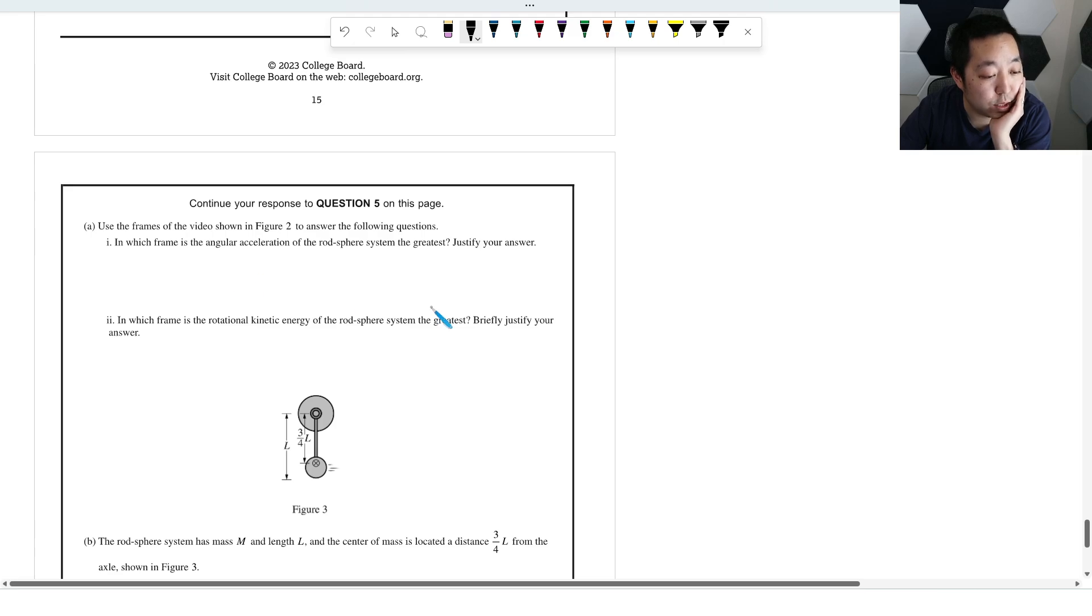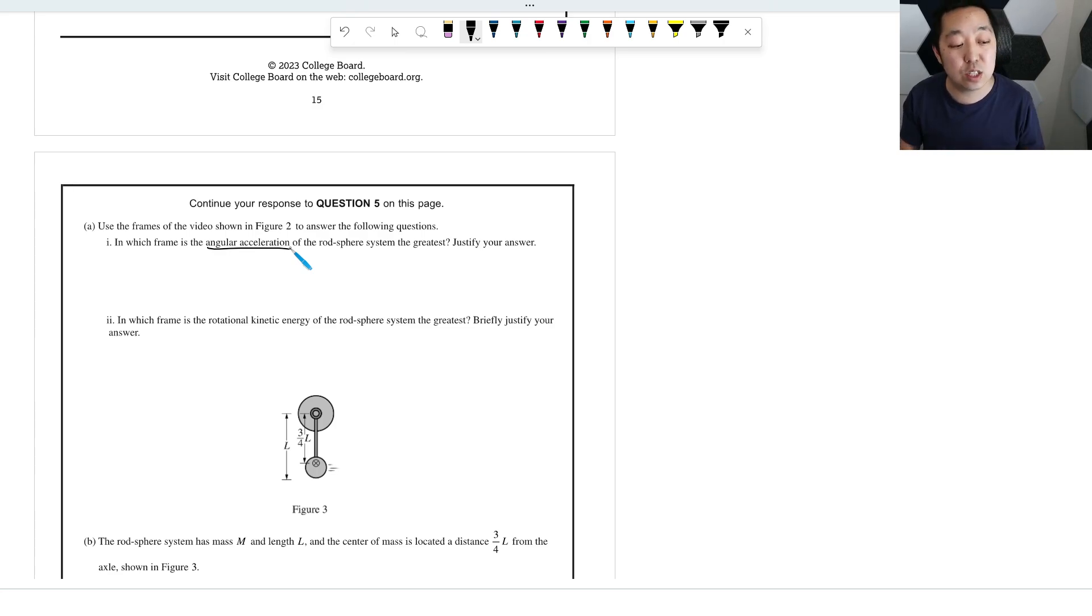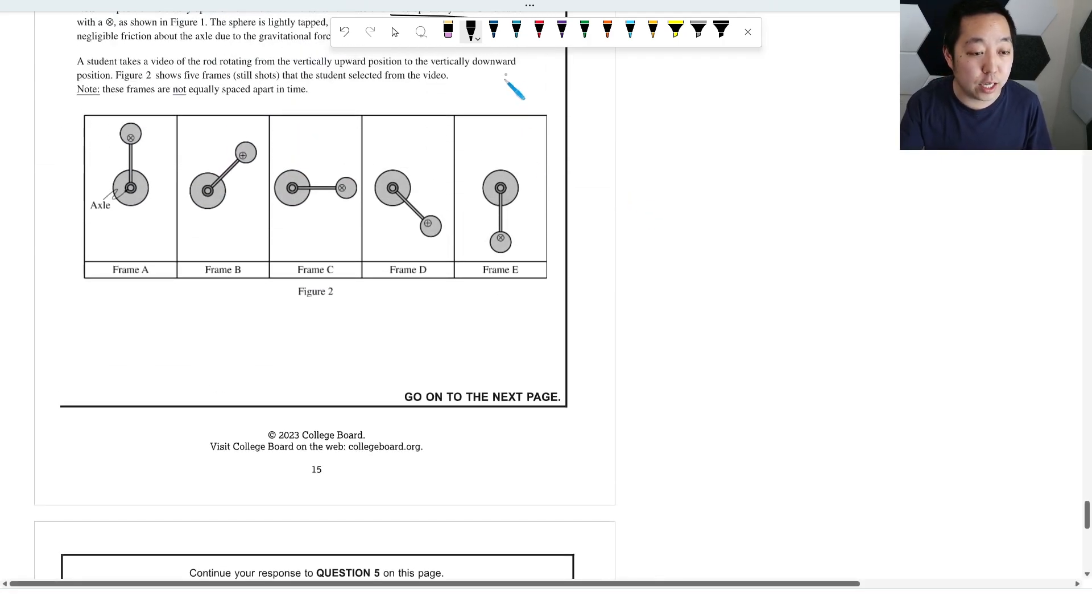Use the frames of the video shown in figure 2 to answer the questions. Which frame is the angular acceleration of the rod system the greatest? So angular acceleration, I want to know when it is the greatest. When it is the greatest has to do with, if I'm asking you about angular acceleration, you should be thinking either kinematics, which I don't have enough, or you should be thinking net torque equals I alpha, right? That's a dynamics question. So that's a free body diagram question. So you should be looking at the free body diagram. And the axle force is always going to be some force there. You're going to have gravity on this thing, and you're going to have gravity on this thing. But hopefully the only thing that matters is the torque.